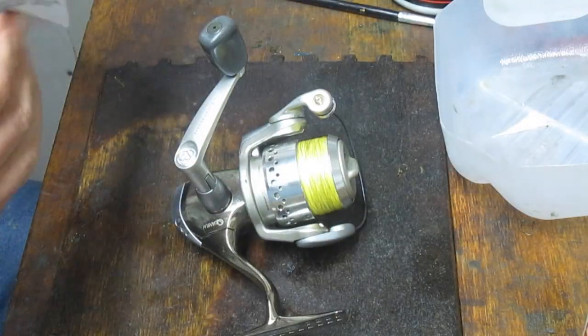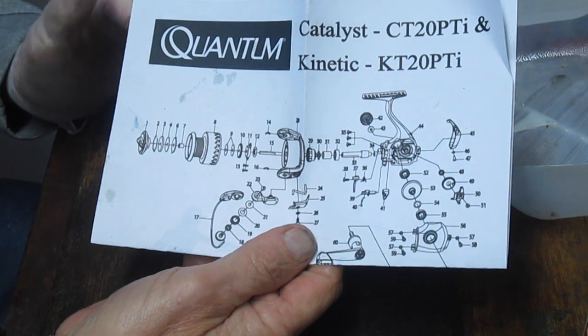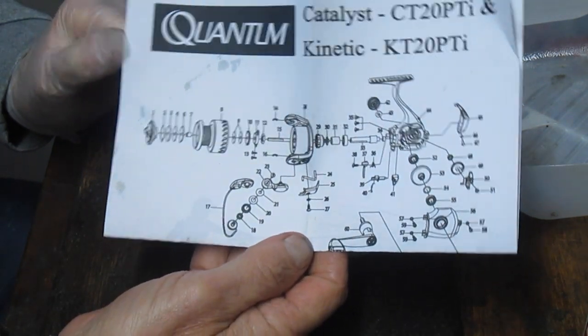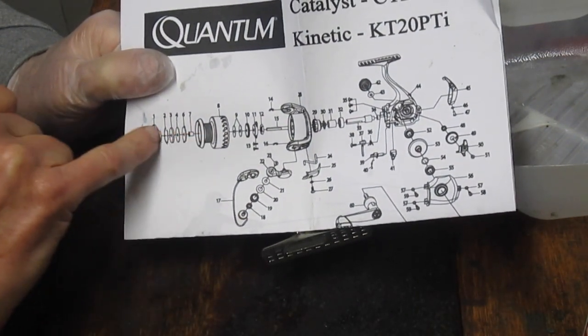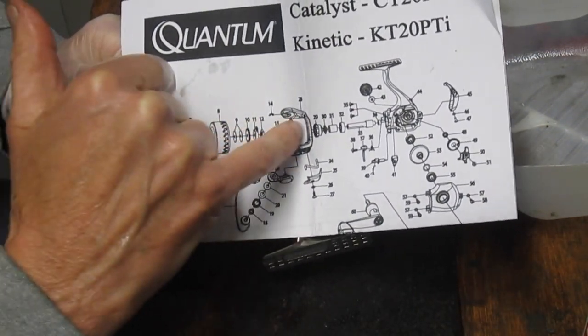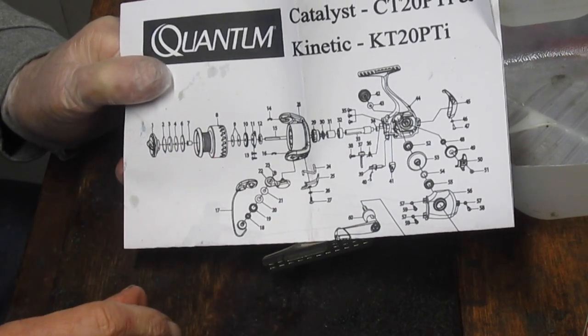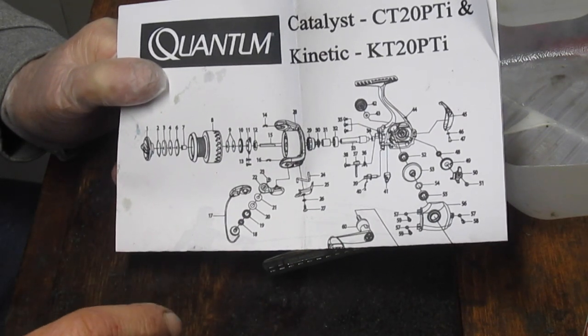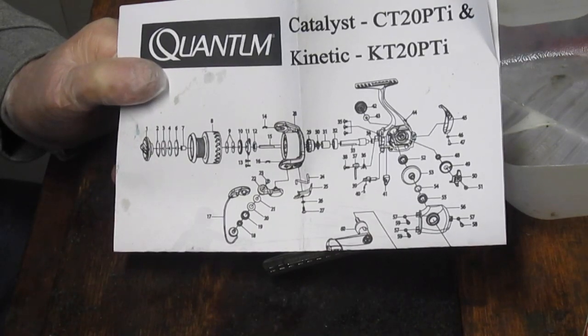Whenever I do a reel that I don't know about, I want to go out to the websites that have the schematics and pull one down so I know what I'm looking at. In particular, in this reel there's something going on in this whole drag column here. I also wanted to get a general idea of what it's going to look like when I open it up underneath.